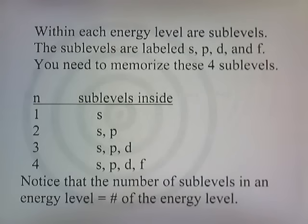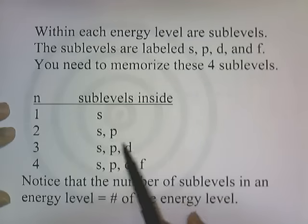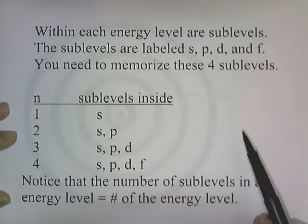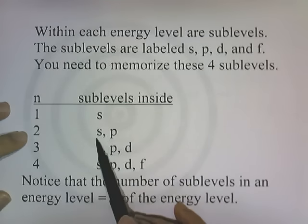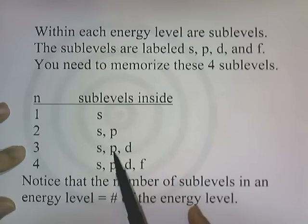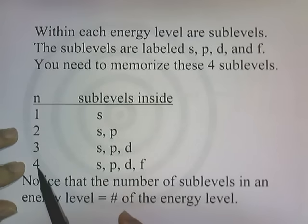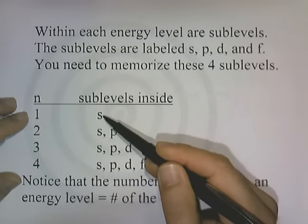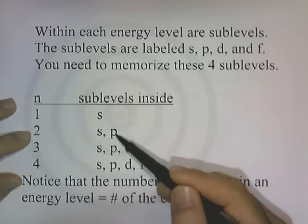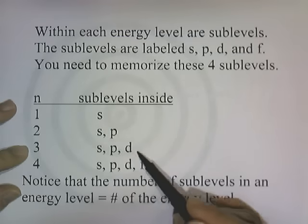Within energy levels are sub-levels, labeled S, P, D, and F — you need to memorize these four sub-levels. The first energy level has only an S sub-level. The second energy level has S and P sub-levels. The third energy level has S, P, and D. The fourth energy level has S, P, D, and F. The number of sub-levels in an energy level equals the number of that energy level: the first has 1 sub-level, the second has 2, the third has 3, and so on.